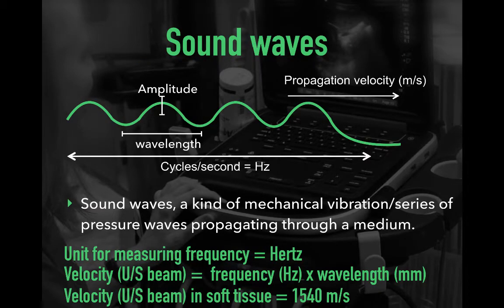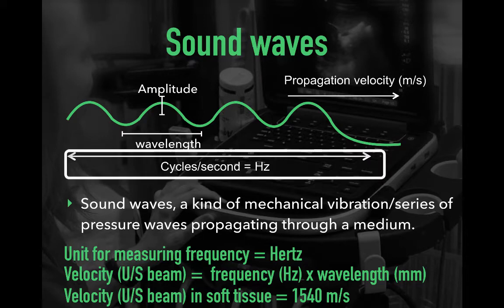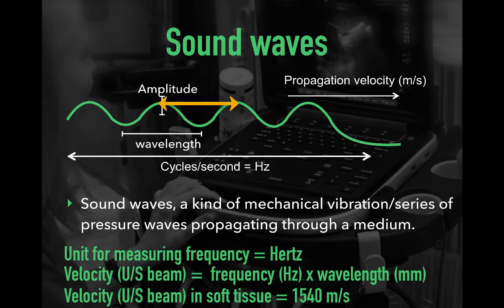Sound waves are a longitudinal wave or mechanical vibration. Properties of sound waves include frequency, wavelength, amplitude, and period. Frequency is the number of repetitions or cycles per second, measured in Hertz. Wavelength is the distance between excitations, or peak to peak. Frequency and wavelength are inversely related — as frequency goes up, wavelength goes down, and as frequency goes down, wavelength goes up.